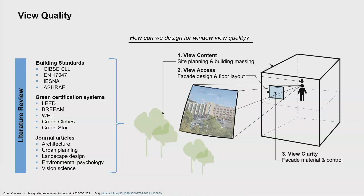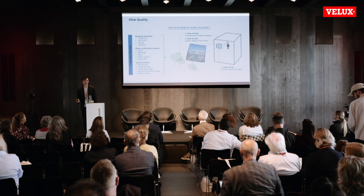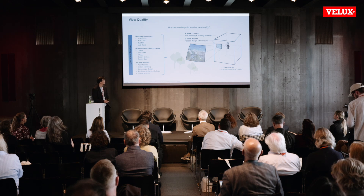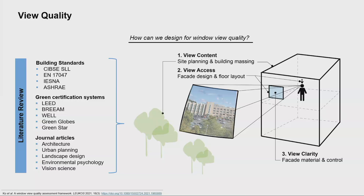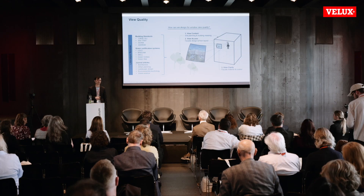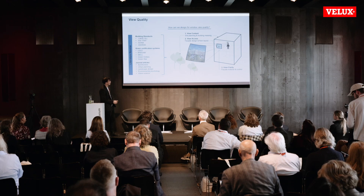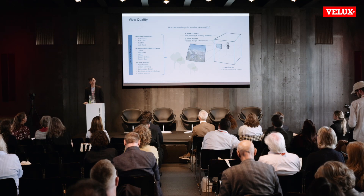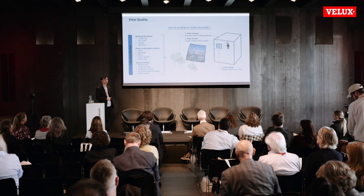Those three parameters are view content, view access, and view clarity. These come into the design process at different stages. View content relates to early-stage design — site planning and massing, where we orientate windows relative to the outdoor landscape. View access relates to the spatial distribution of the floor plan, such as where workstations are placed relative to the facade perimeter. View clarity relates to the facade materials and how we control daylight coming in and the view going out.